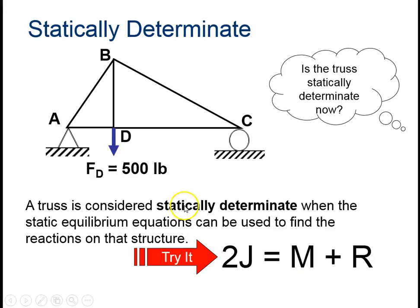How about now? What's the difference? Well, they replaced this one with a roller, so this just has one reaction force here. So the joints and the members didn't change, but the reaction forces is now three. One, and then one, two here. Eight does equal eight, so this is statically determinate.